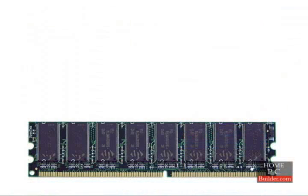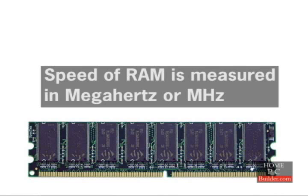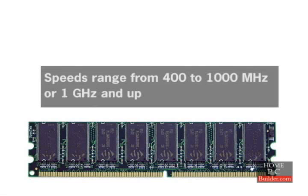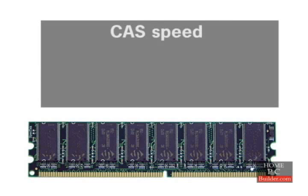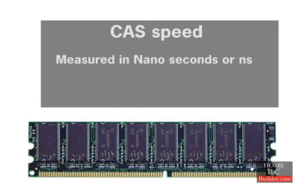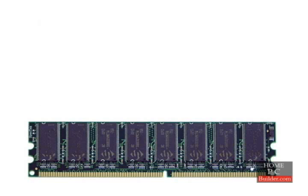The speed of the RAM is also important. The speed of the memory is measured in megahertz, or MHz, and ranges from 400 megahertz to 1000 megahertz, or 1 gigahertz and up. Generally, you should get the fastest RAM the motherboard you choose can handle. Another measurement of RAM speed is called CAS, measured in nanoseconds, or NS, and comes in speeds of 3 to 5. 3 is faster, but the difference in real-world performance is very small, so it's hard to recommend spending extra for CAS 3 RAM.